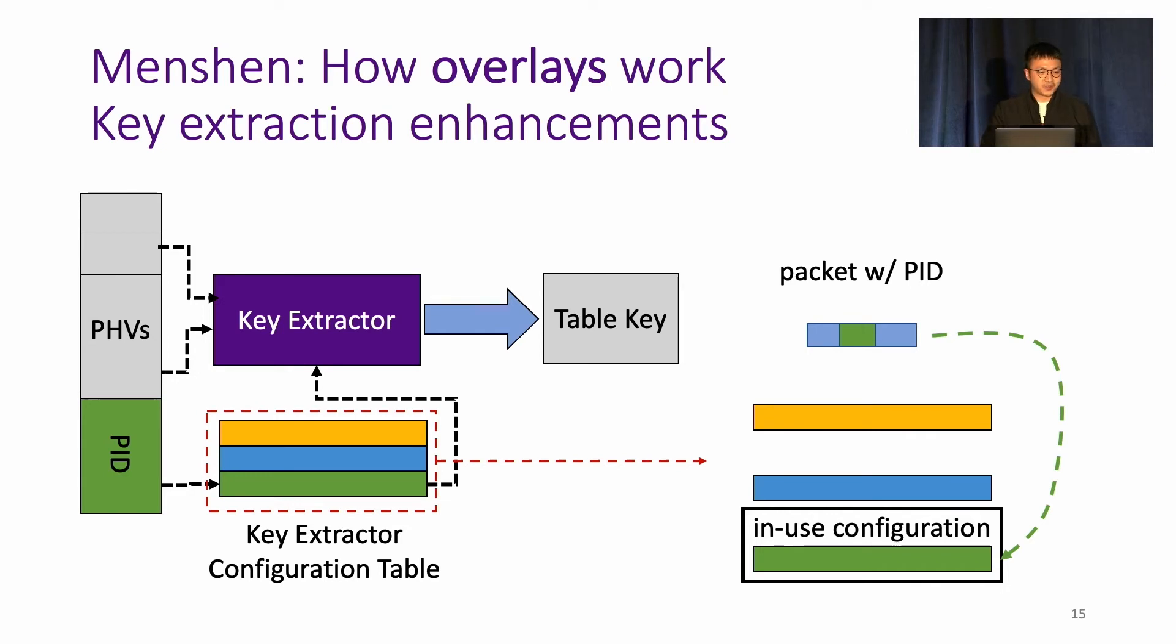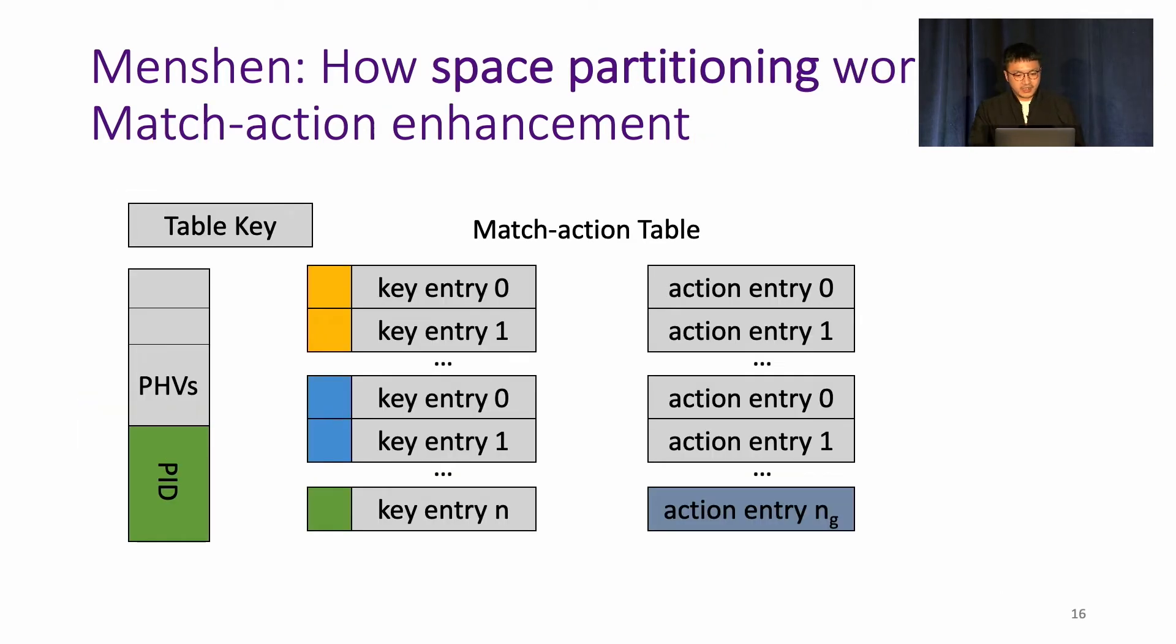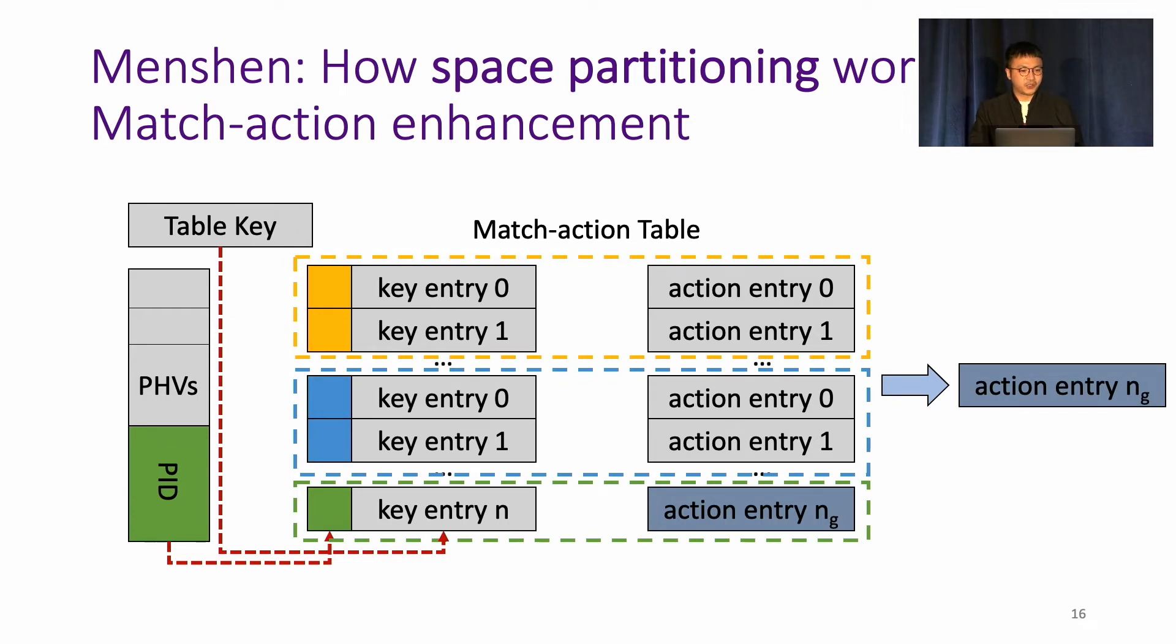The program parser works in a similar way. And in the match action process, both the PID and the table key are matched against the table entries in the match action table to get the action entry. So in this case, each entry in the match action table is appended with the PID. So the PID effectively works as an indicator of the regions that are allocated to different programs. So the resources here are space partitioned among the programs.